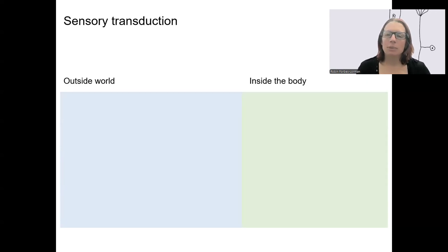So we need to start by talking about how our body senses or detects things. This is called sensory transduction. Sensory transduction is the process in which physical energy is converted into a neural signal.